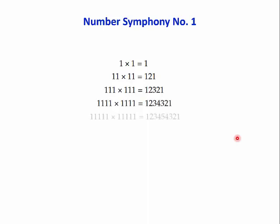Now here's what we might call a number symphony. One times one is one. Eleven times eleven is one, two, one. One hundred and eleven times one hundred and eleven is one, two, three, two, one. Obviously there's a pattern here, which will enable you to extend it as far as you like. So once you've seen the pattern, you can continue.